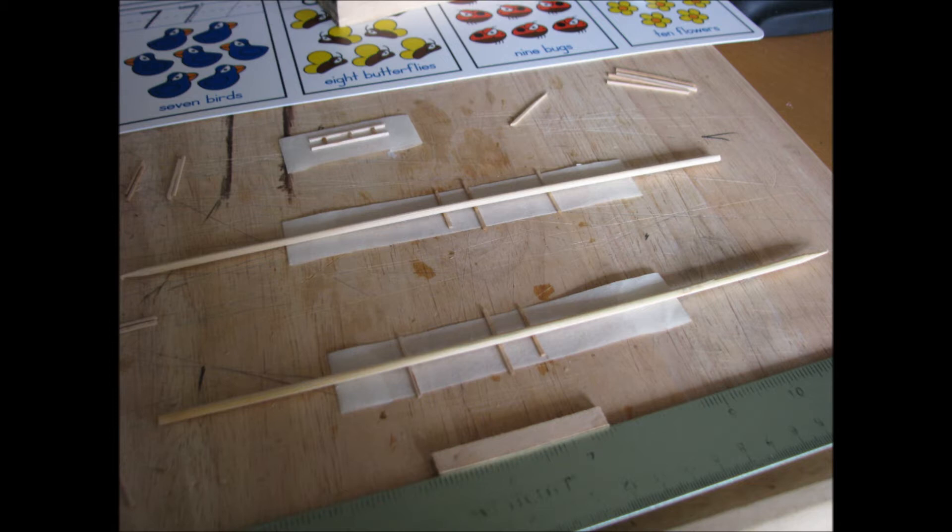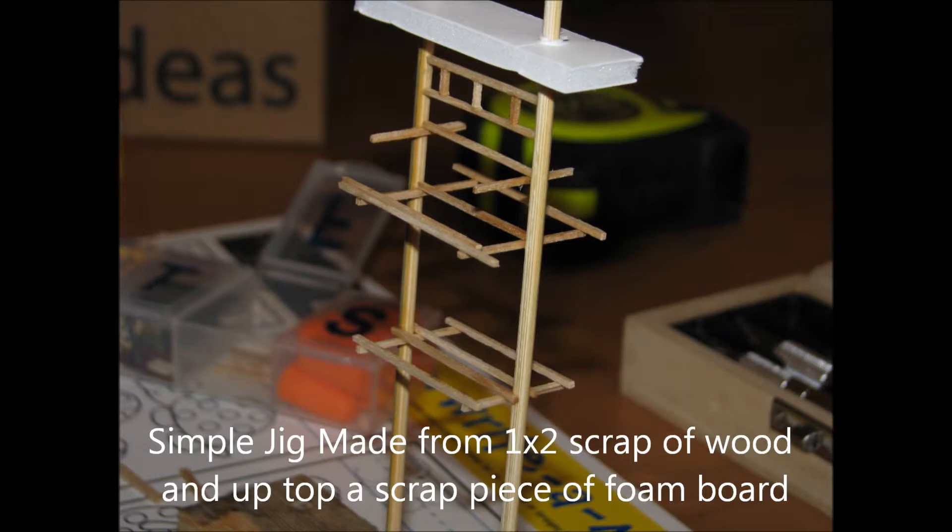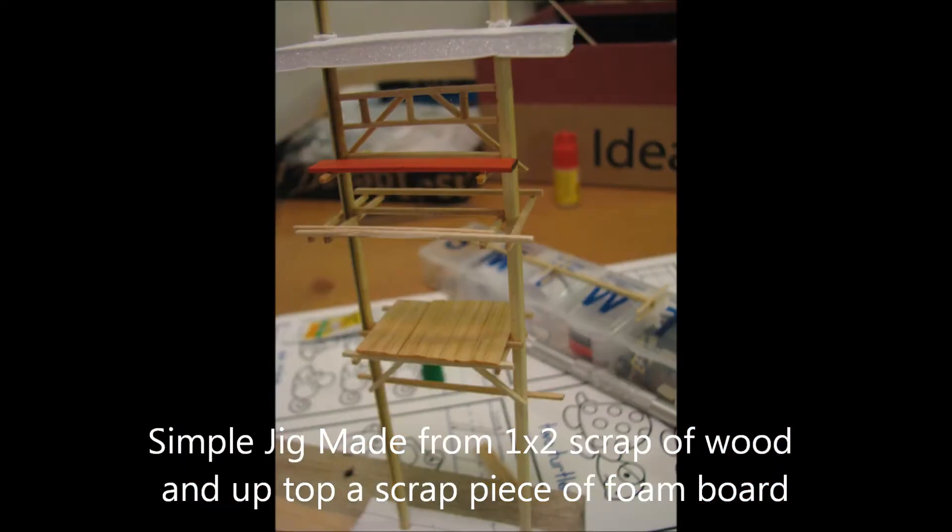The next step was to glue everything together. Initially I used a piece of tape to hold the cross members while the glue set on the power poles. Then I used a jig, set everything up in the jig, glued the cross members, the supports, all of the smaller details, the platform, the walkway.